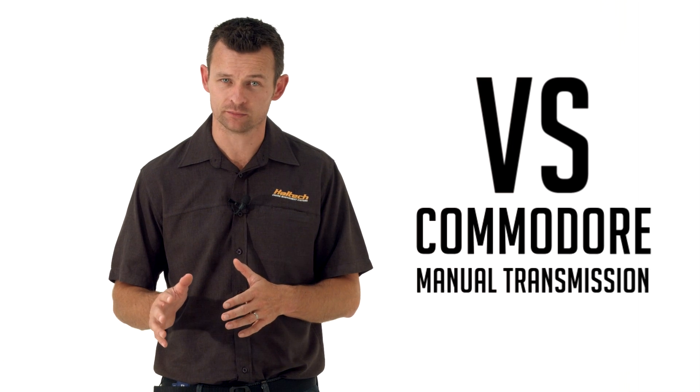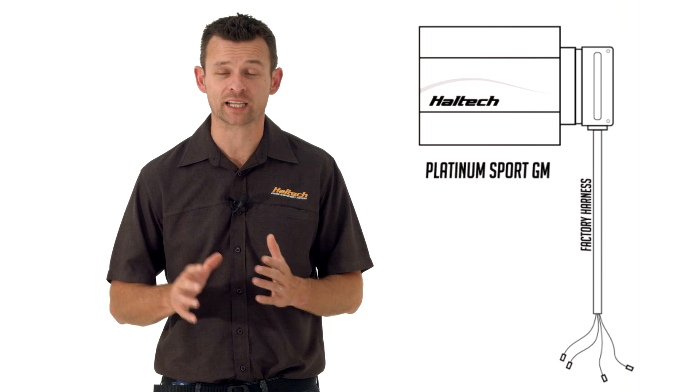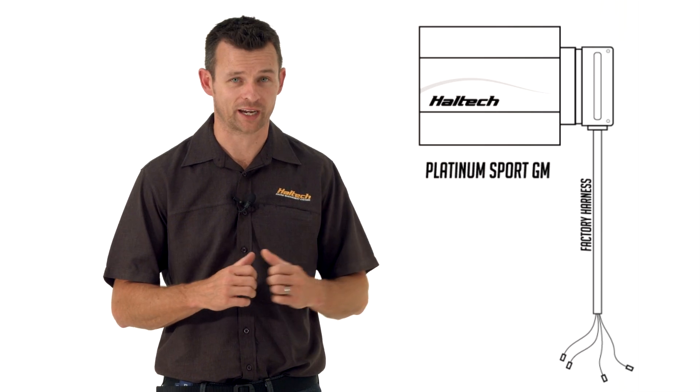If you've got a VR or VS Commodore with a manual transmission, then this same Sport GM ECU will also plug directly into the stock Holden wiring harness.